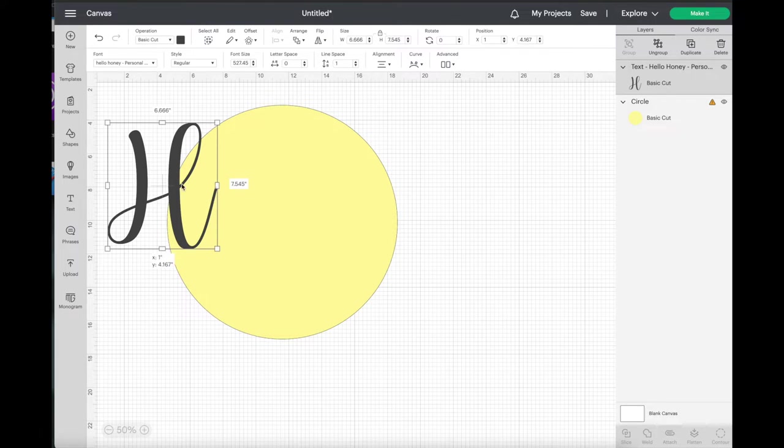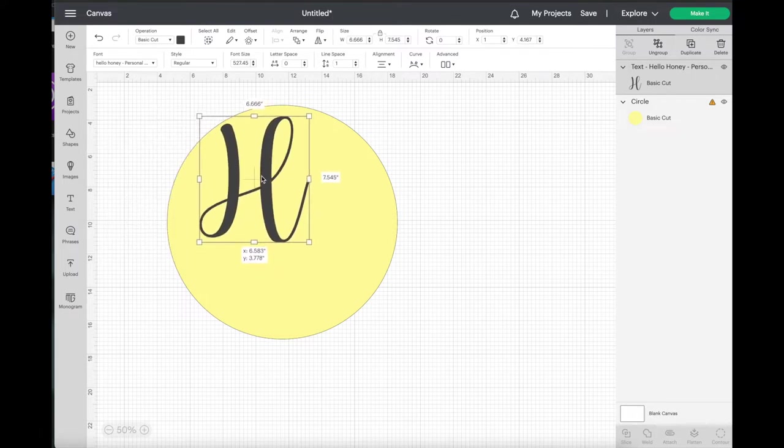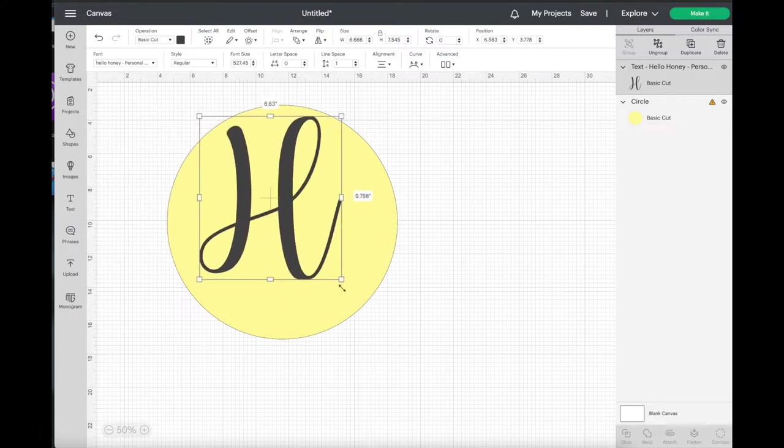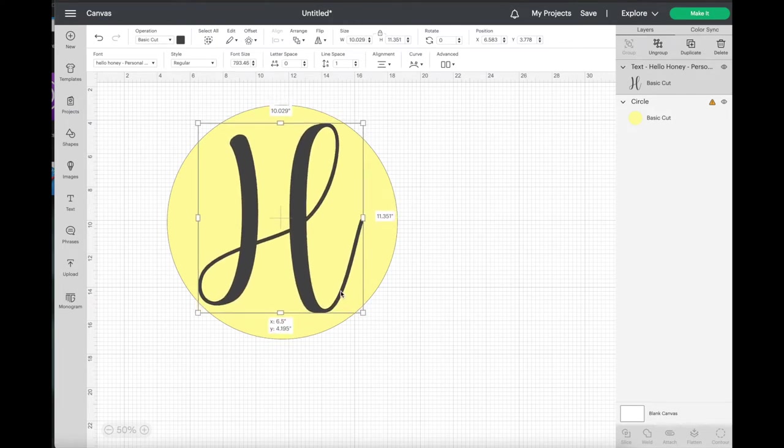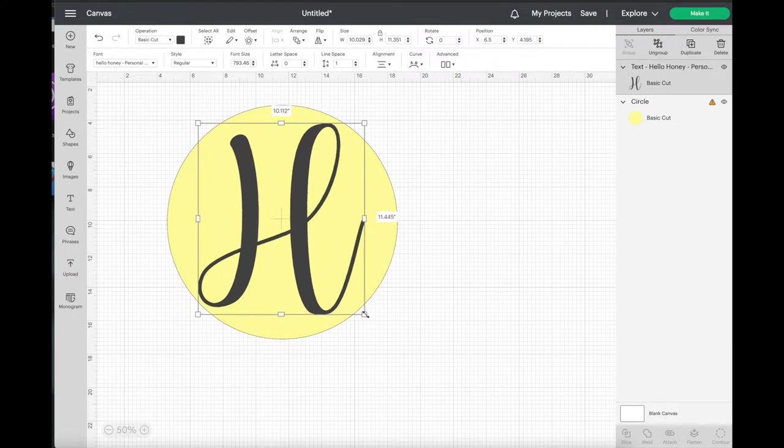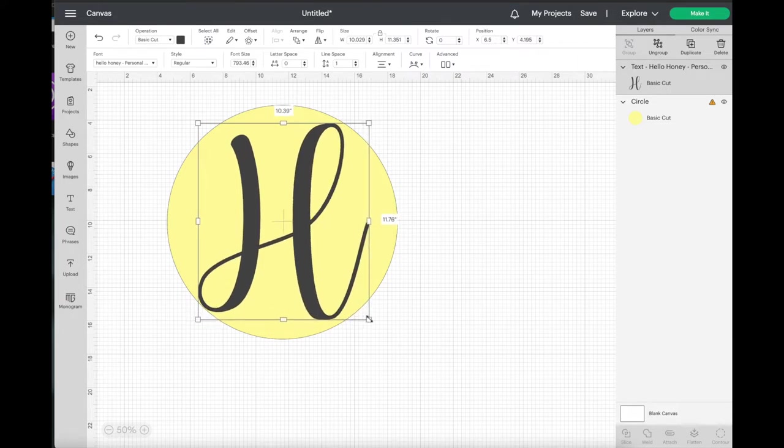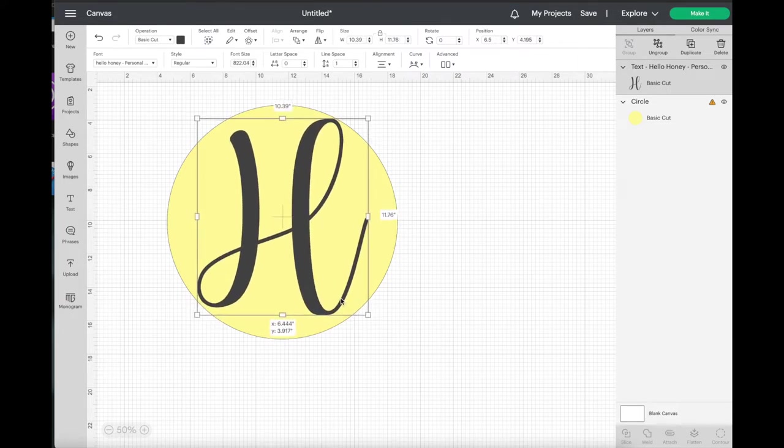Now if you don't have a Cricut no worries at all because you can just print out the image you want and either use graphite paper or carbon paper to trace the image onto the wood, or you can use your pencil and rub the back of your image on your paper and trace it on that way. You know, just lots of different options that you can do.